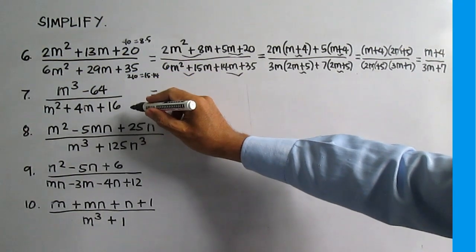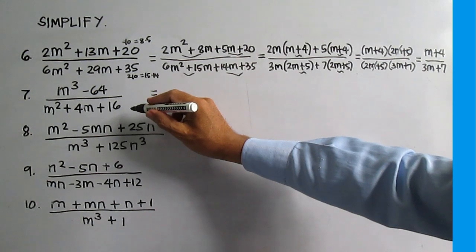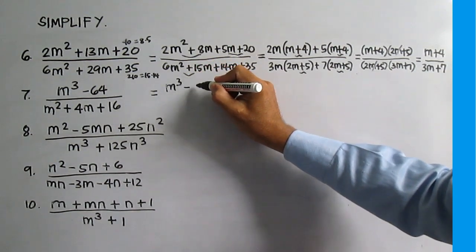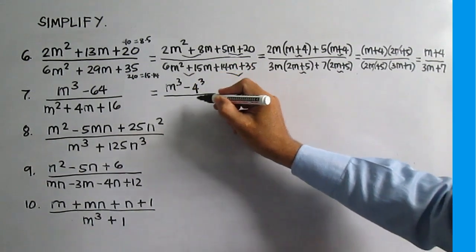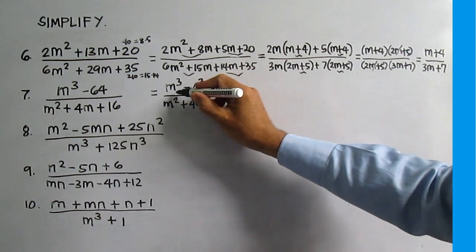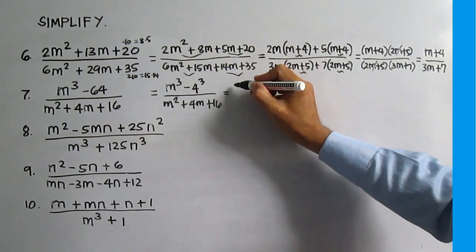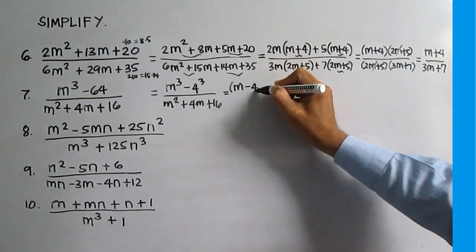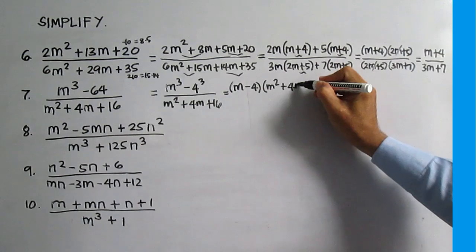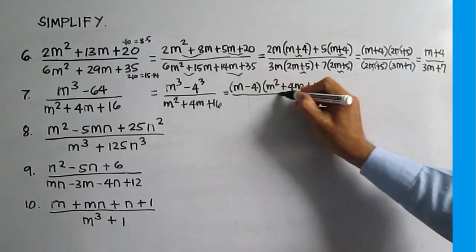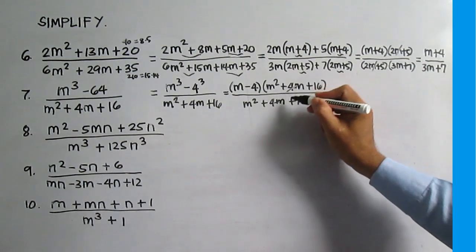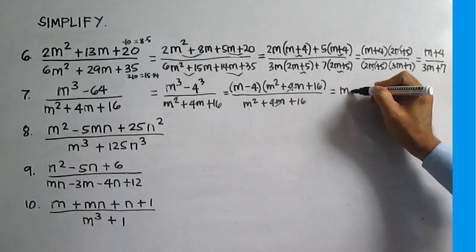Number 7: M cubed minus 64 over M squared plus 4M plus 16. M cubed minus 64 equals M cubed minus 4 cubed. Factor M cubed minus 4 cubed: this is M minus 4 times M squared plus 4M plus 16, all over M squared plus 4M plus 16. M squared plus 4M plus 16 is common. Divide. The answer is M minus 4.